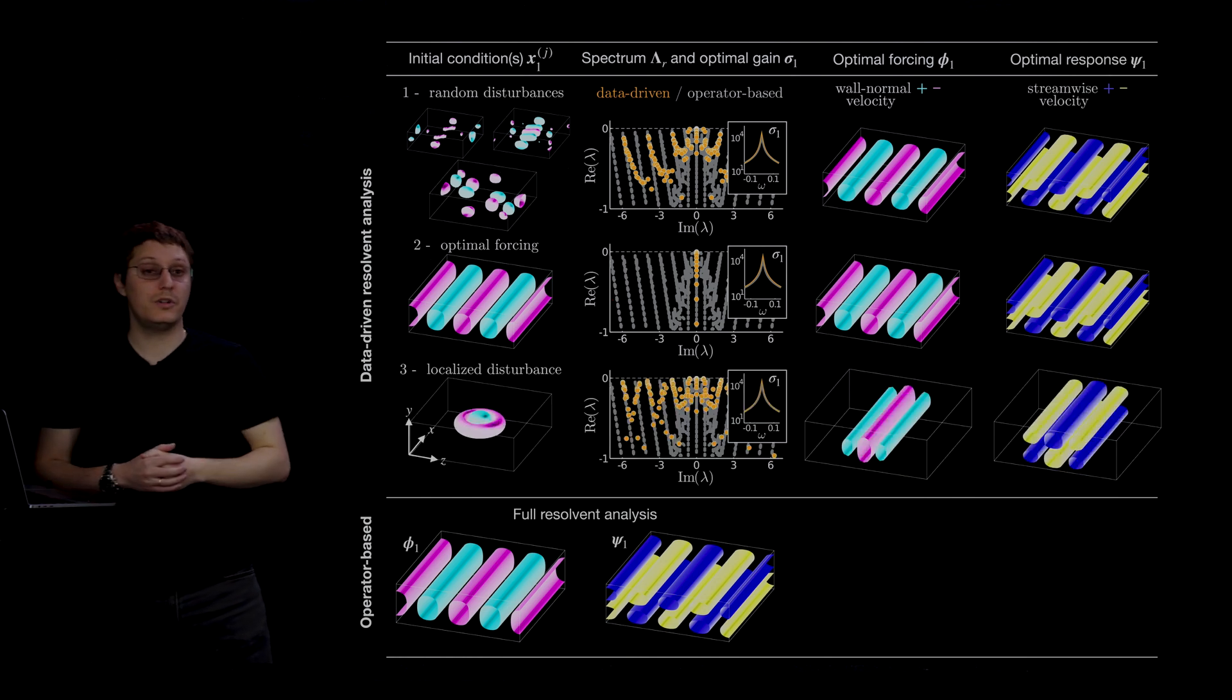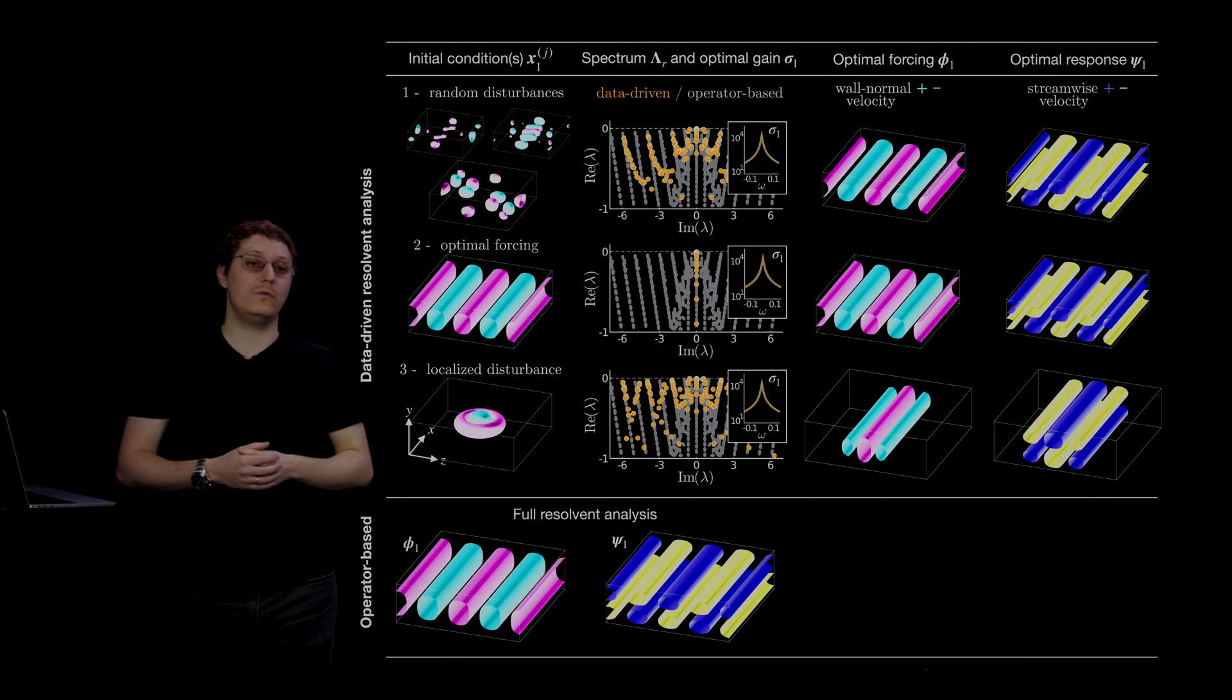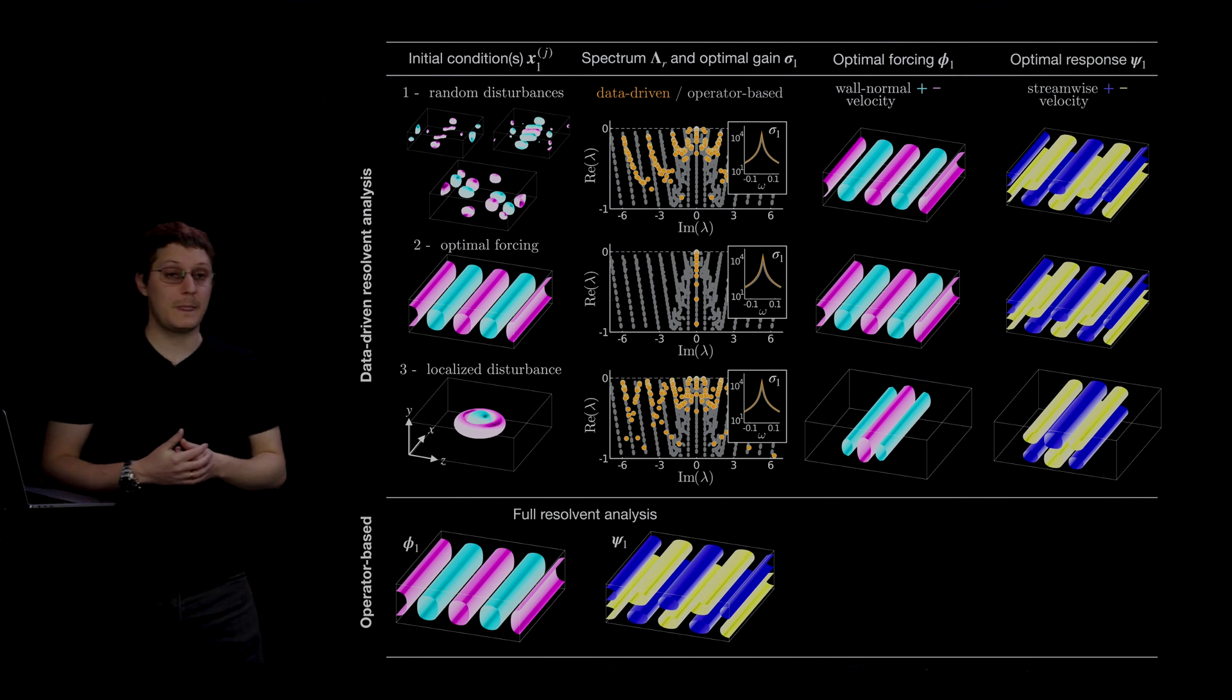So the last result that I want to show you is what happens when you use a localized disturbance as the initial condition to generate the dataset. Here we're using this donut-shaped perturbation, which is something that resembles what you would get in an experiment with a wall-normal jet.